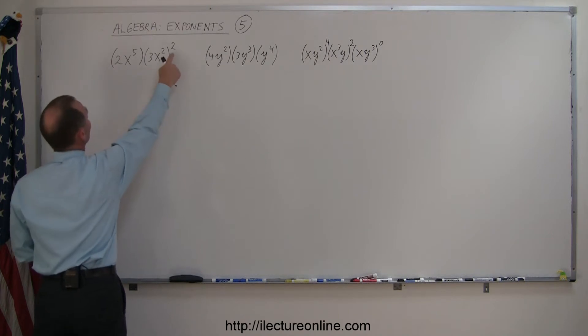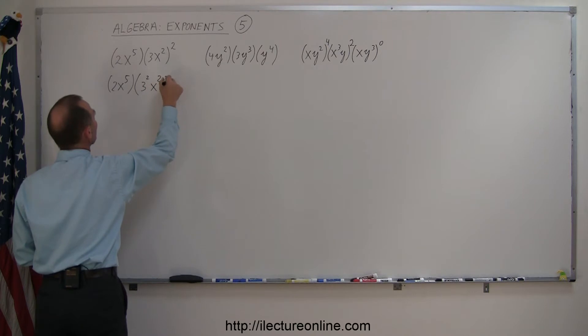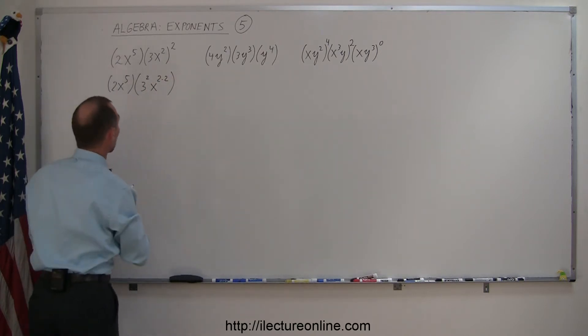First example. Let's first apply this exponent to what's inside the parentheses. So this becomes 2x to the fifth power times 3 squared and x to the 2 times 2 power. Remember, when you have an exponent raised to an exponent, you multiply exponents.